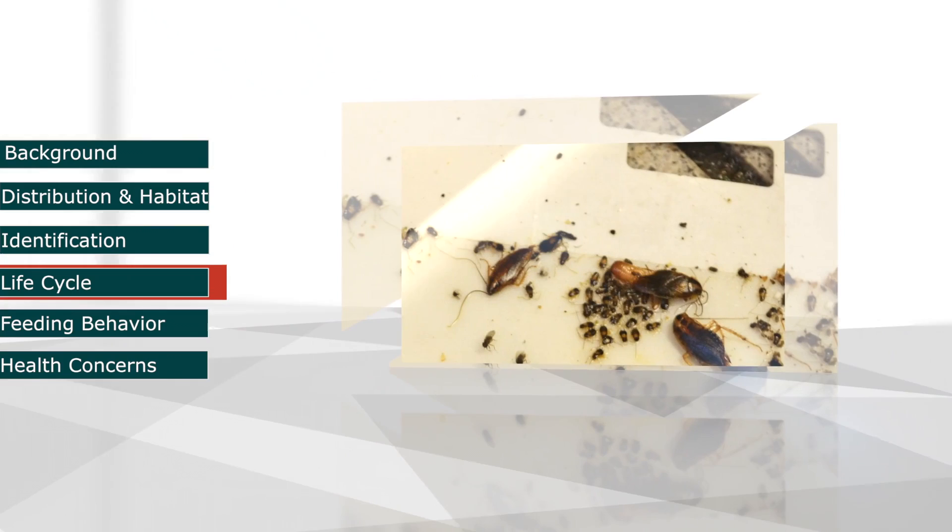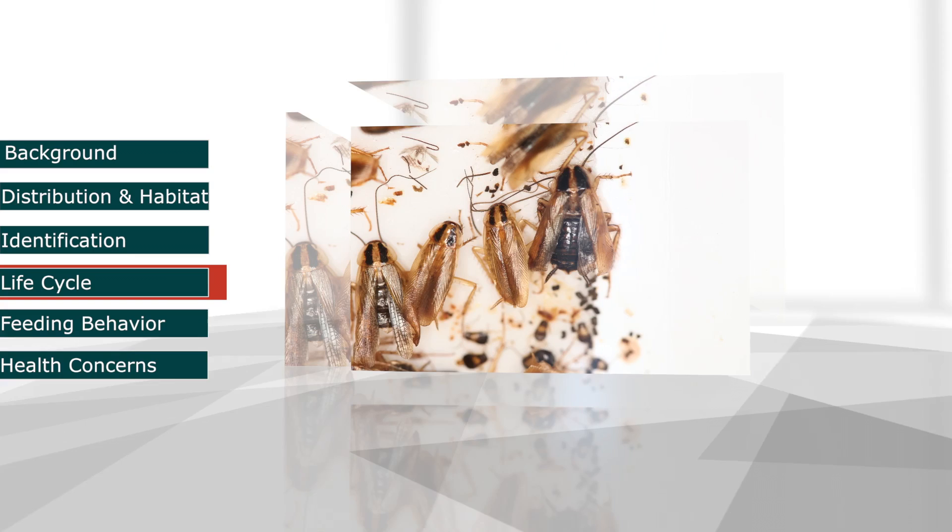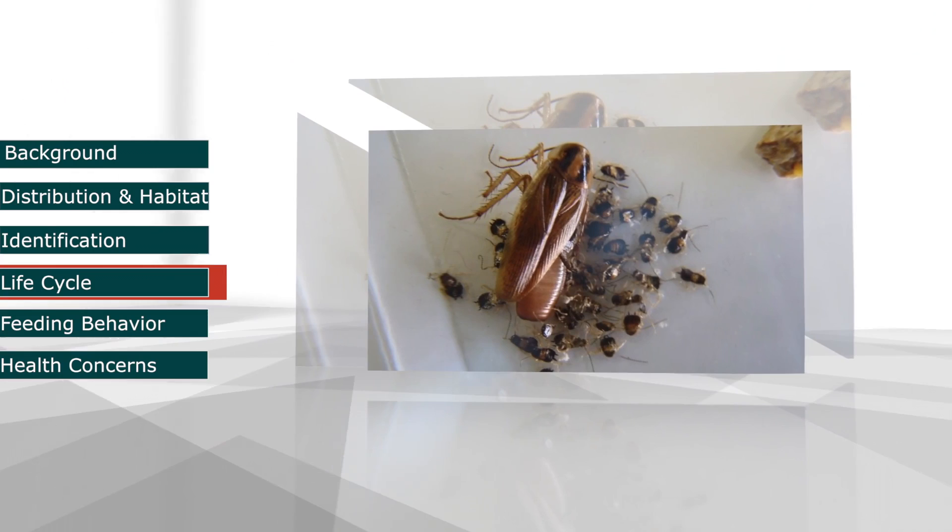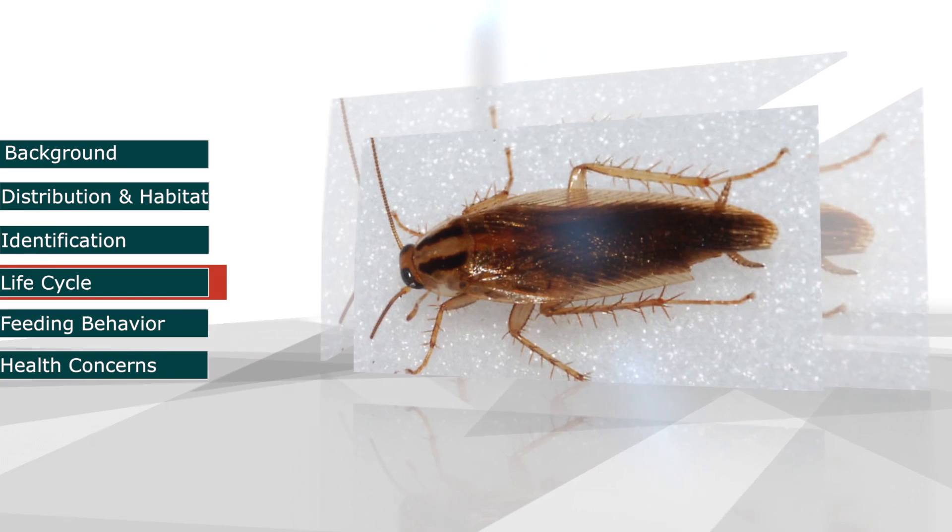A female cockroach can mate more than once, but she can also fertilize all the eggs she produces in her lifetime with just a single mating. The female produces an ootheca, an egg capsule less than a quarter of an inch long that contains 30 to 40 individual eggs.